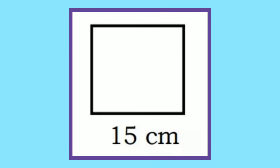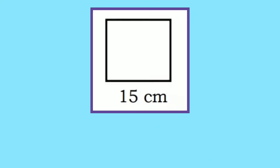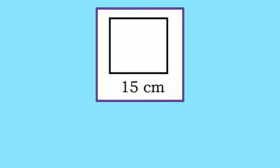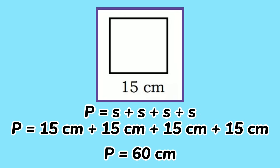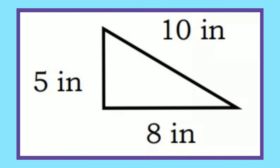For this figure, the square, the length of each side is 15 centimeters. Since a square has 4 equal sides, let's add 4 fifteens. So P equals 15 plus 15 plus 15 plus 15, which gives you 60 centimeters.